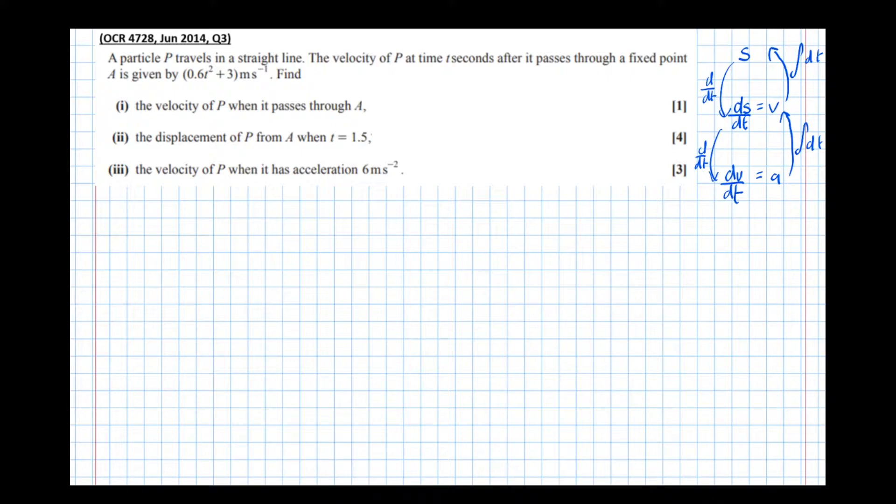So let's apply that to this question. There's a particle P travels in a straight line. The velocity of P at time t seconds after it's passed through fixed point A is given by that expression there, 0.6 t squared plus 3. Find the velocity of P when it passes through A.